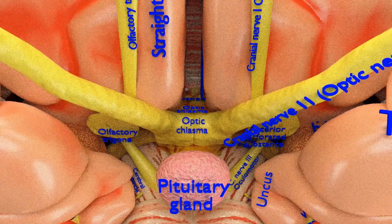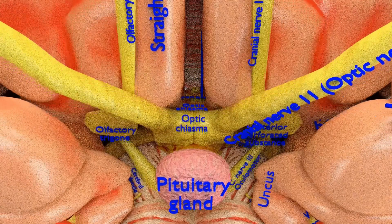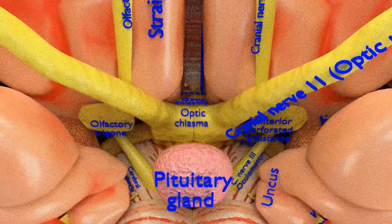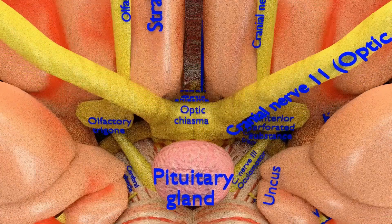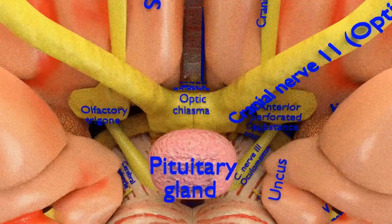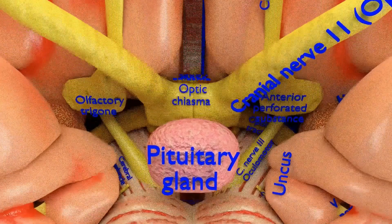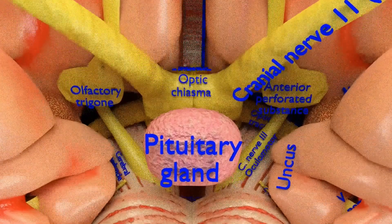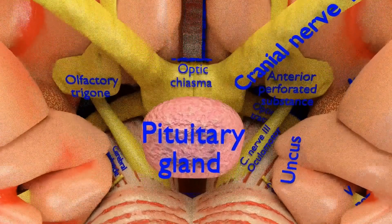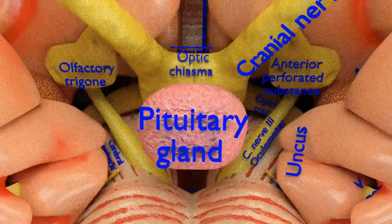The optic nerve, also known as cranial nerve 2 or CN2, is a paired cranial nerve that transmits visual information from the retina to the brain. It will be discussed in detail in the fourth part of this video series.